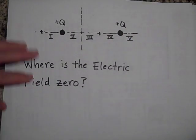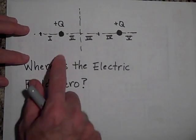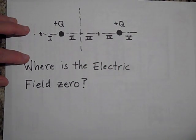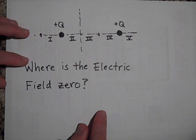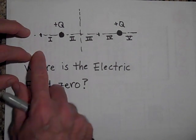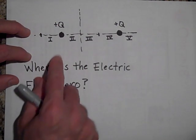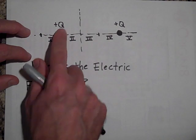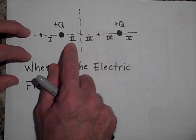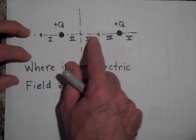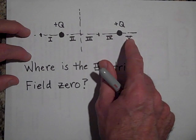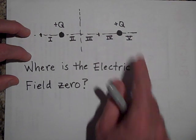I have two charges, Q and Q. They're the same charge and they're on a coordinate system. And there are some regions here. Region one is to the left of Q, of this Q. Region two is in the middle. So is region three. So is region four. And region five is on the other side of the right Q.